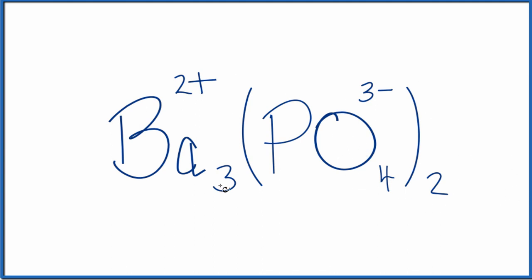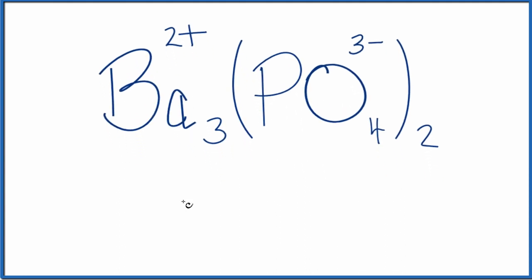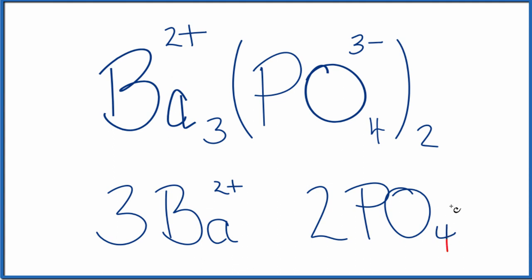When we want to write the ions here, we're going to have three barium ions, and each one of those ions is 2+. For the phosphate here, we'll have two of those phosphate ions, and each one is 3-. So we have a total of 3 plus 2, 5 ions for Ba₃(PO₄)₂, barium phosphate.